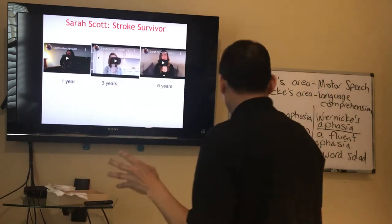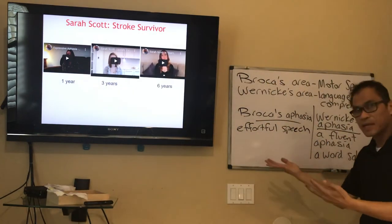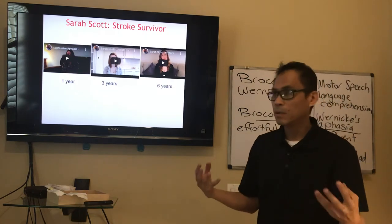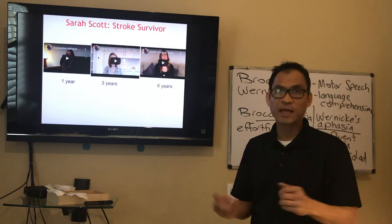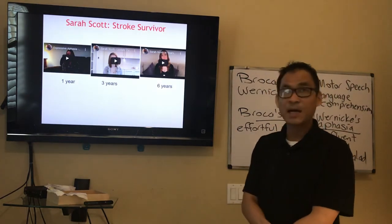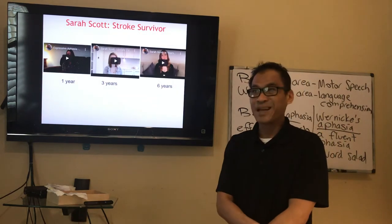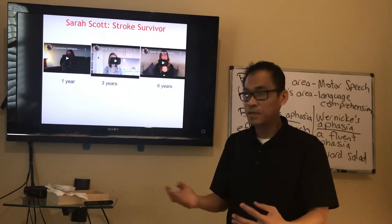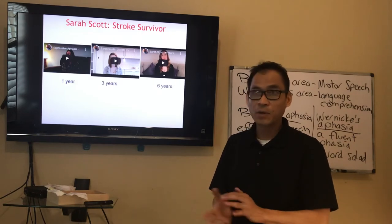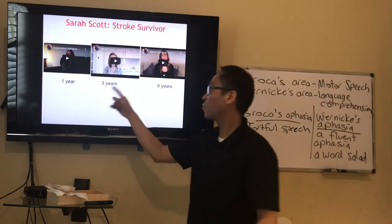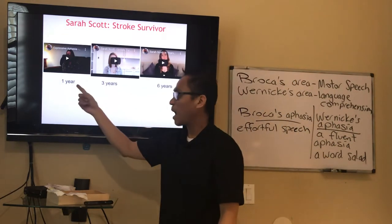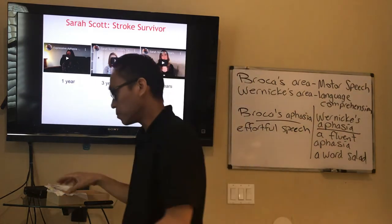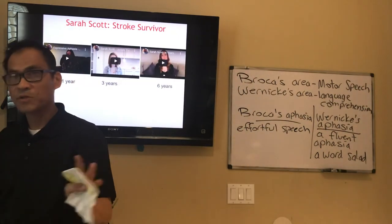This next example is Broca's aphasia — you understand what you want to say, you just can't get the words out. Effortful, difficult speech. You start to drop non-essential words like 'the,' 'and,' pronouns, etc. This is Sarah Scott, a stroke survivor who was 19 when she had her stroke. I want you to see this can affect young people too. We'll see her at one year, three years, and six years post-stroke.